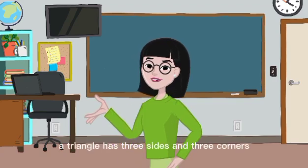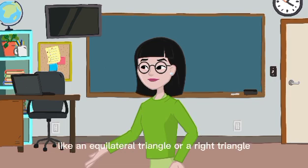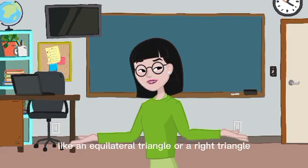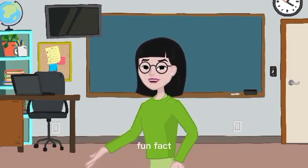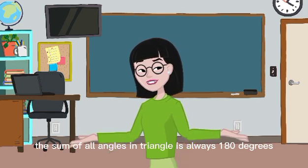A triangle has three sides and three corners. It can be different types like an equilateral triangle or a right triangle. Fun fact! The sum of all angles in a triangle is always 180 degrees.